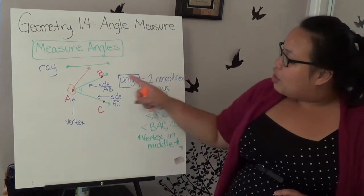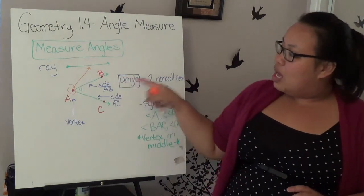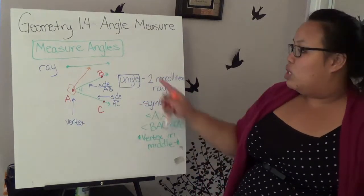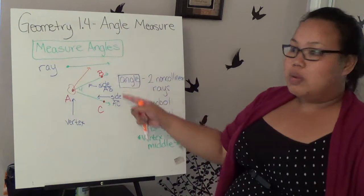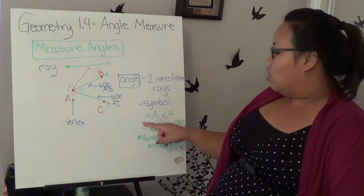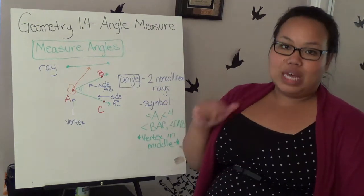If the vertex shares different angles and there's no number, then you need to name it by the three points that make up the angle. The only catch is the middle point always needs to be the vertex. So it doesn't matter if I do B, A, C or C, A, B, as long as the vertex is in the middle.